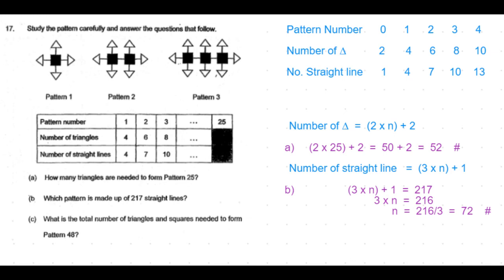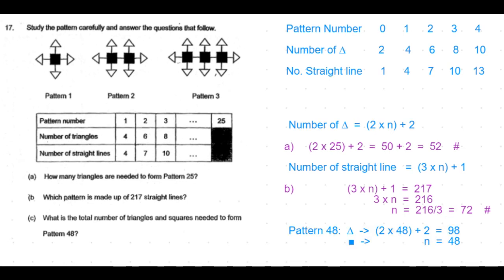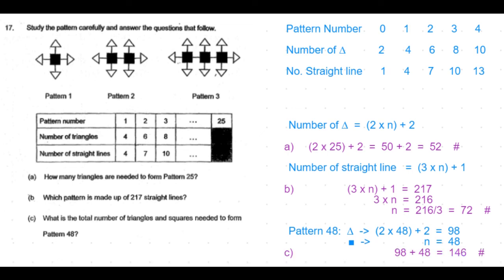For the last part — the total number of triangles and squares in pattern 48 — the number of triangles uses the formula 2n plus 2: 2 times 48 is 96, plus 2 is 98 triangles. For squares, it is very straightforward: pattern 1 has 1 square, pattern 2 has 2 squares, pattern 3 has 3 squares, so pattern 48 has 48 squares. The total is 98 plus 48, which is 146.